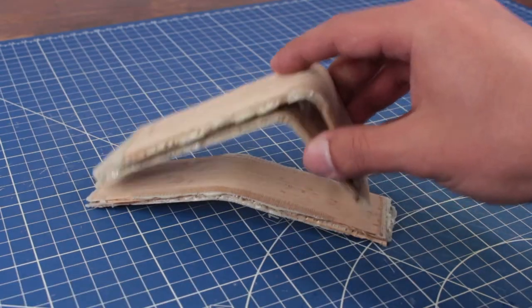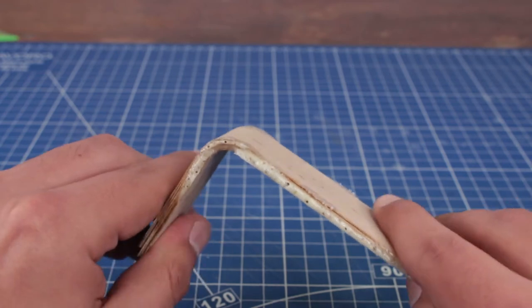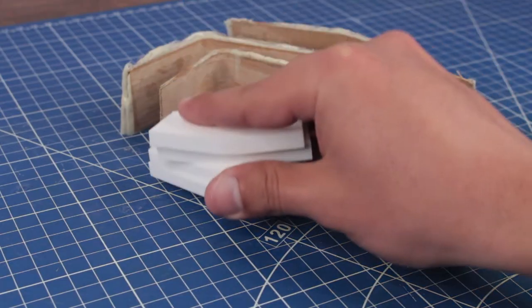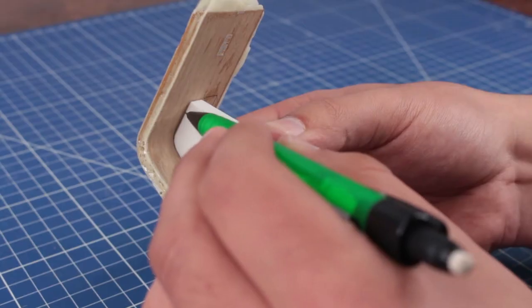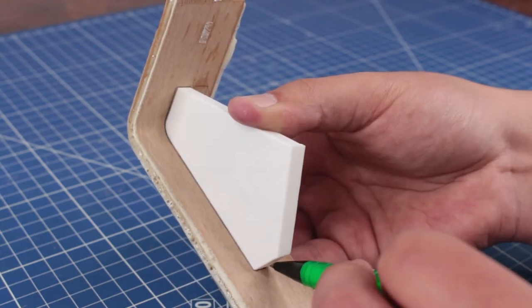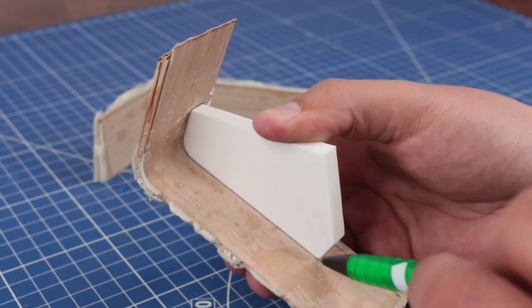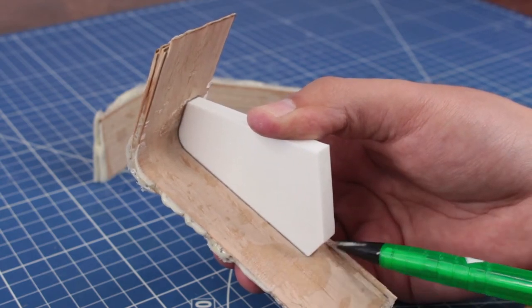And after another 24 hours I got these super strong parts. And to mark the geometry of the parts I used this 3D printed white template. I used the template and my mechanical pencil to mark the outline of the pieces.